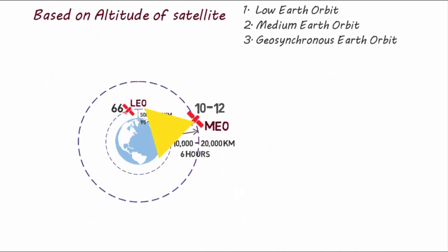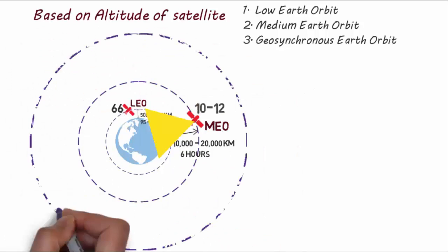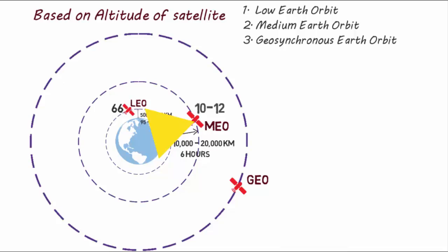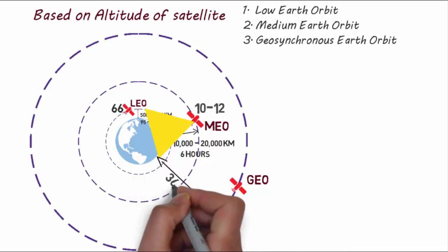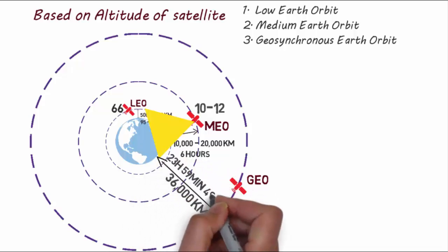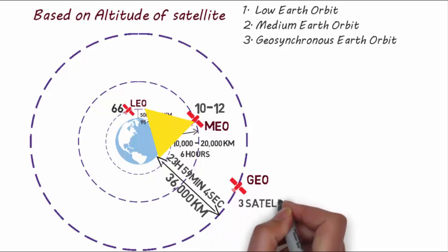Now the next one is geosynchronous earth orbit, in short it is called GEO. Height of this satellite is around 36,000 km from earth's surface, and they have a time period of 23 hours, 59 minutes, and 4 seconds. One geosatellite can cover around 40% area of earth's surface, so minimum of three geosatellites placed at 120 degree are required to cover the entire earth.